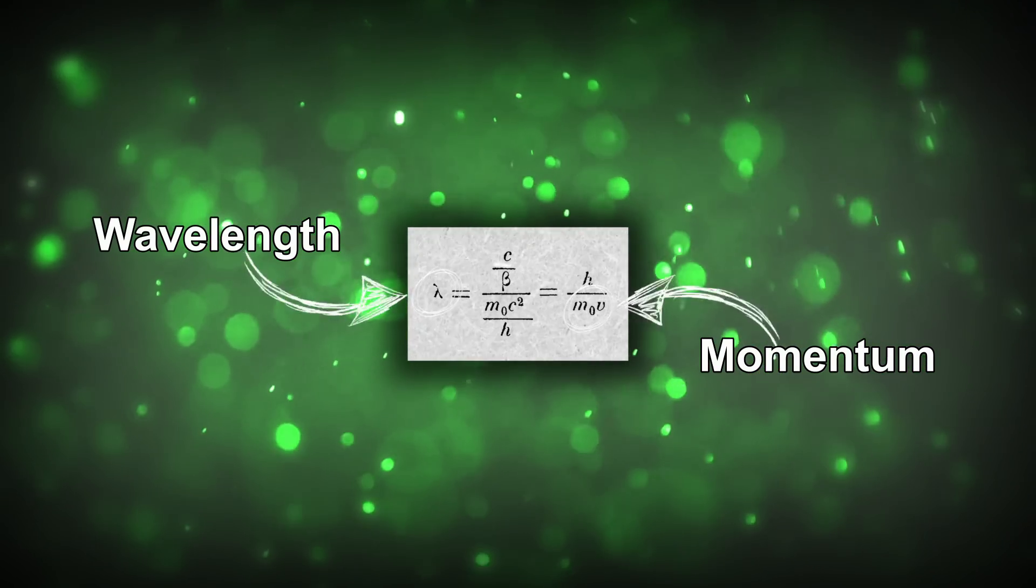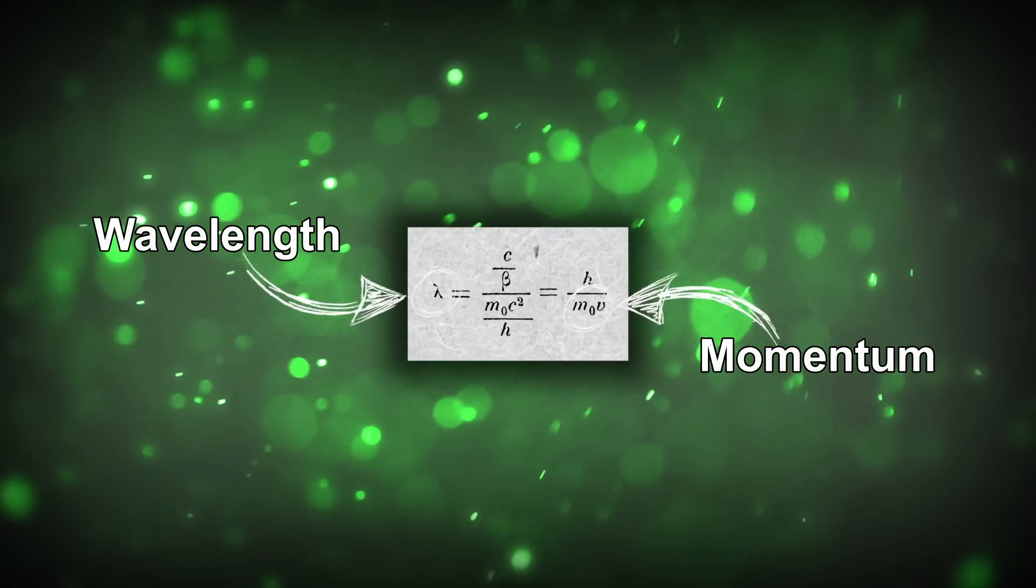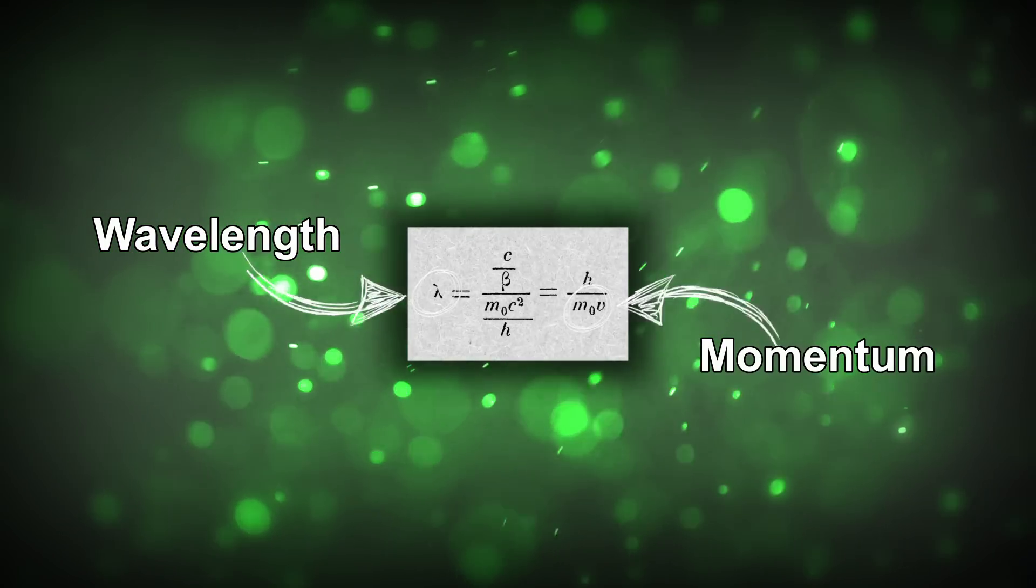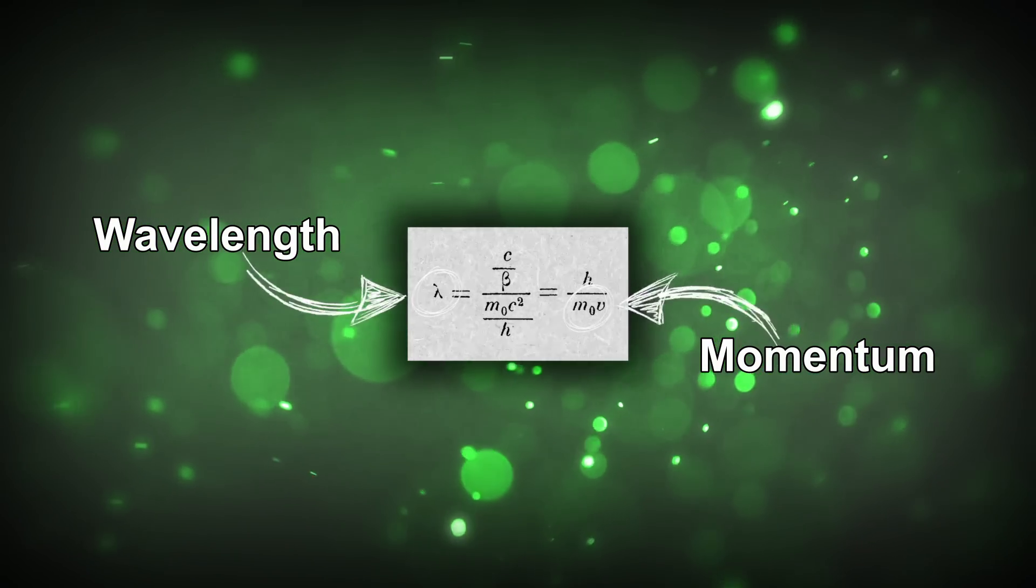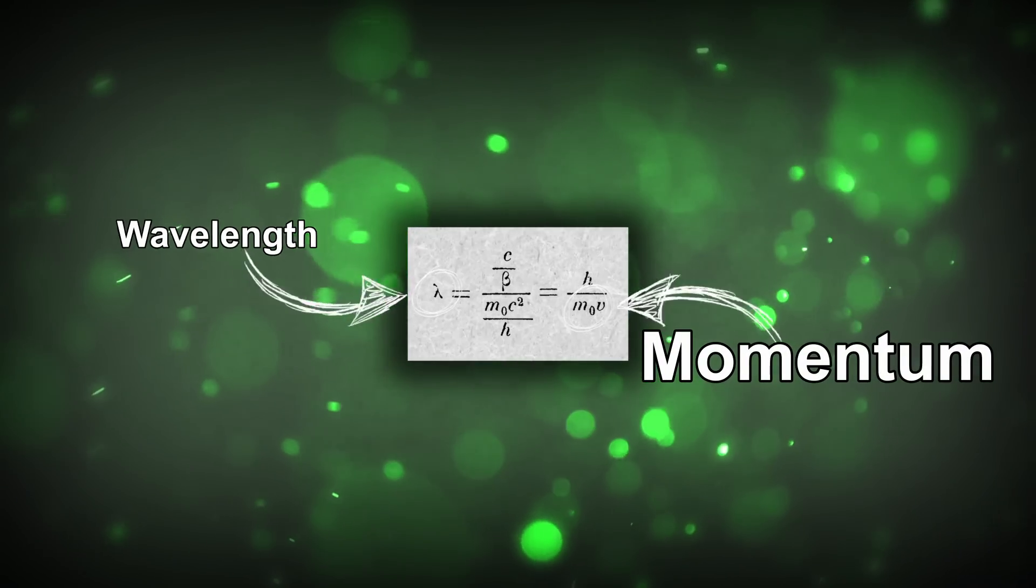His equation suggests that all matter has a wavelength. This means that even you and I have wavelengths of our own. The thing is though, according to this equation, the bigger the mass, the smaller the wavelength.